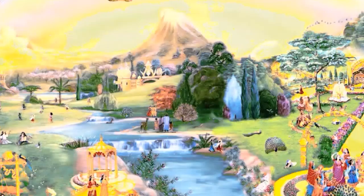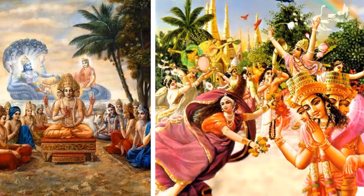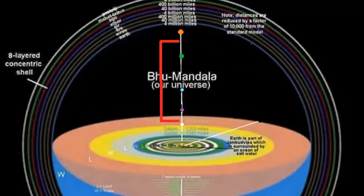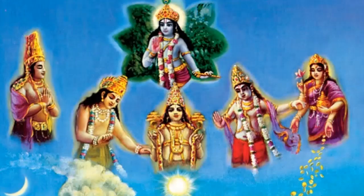Until we reach the topmost planet, Satyaloka, where Lord Brahma resides. The demigods, populating the more elevated regions, are empowered representatives of the Lord, who have various universal functions.